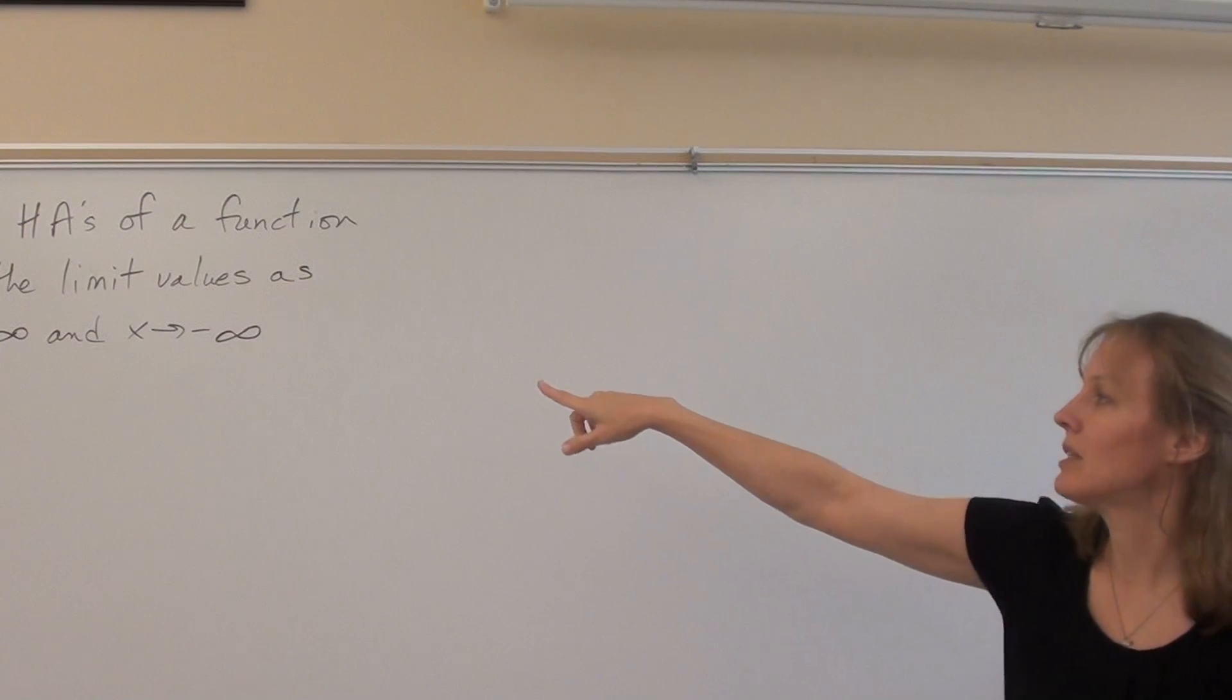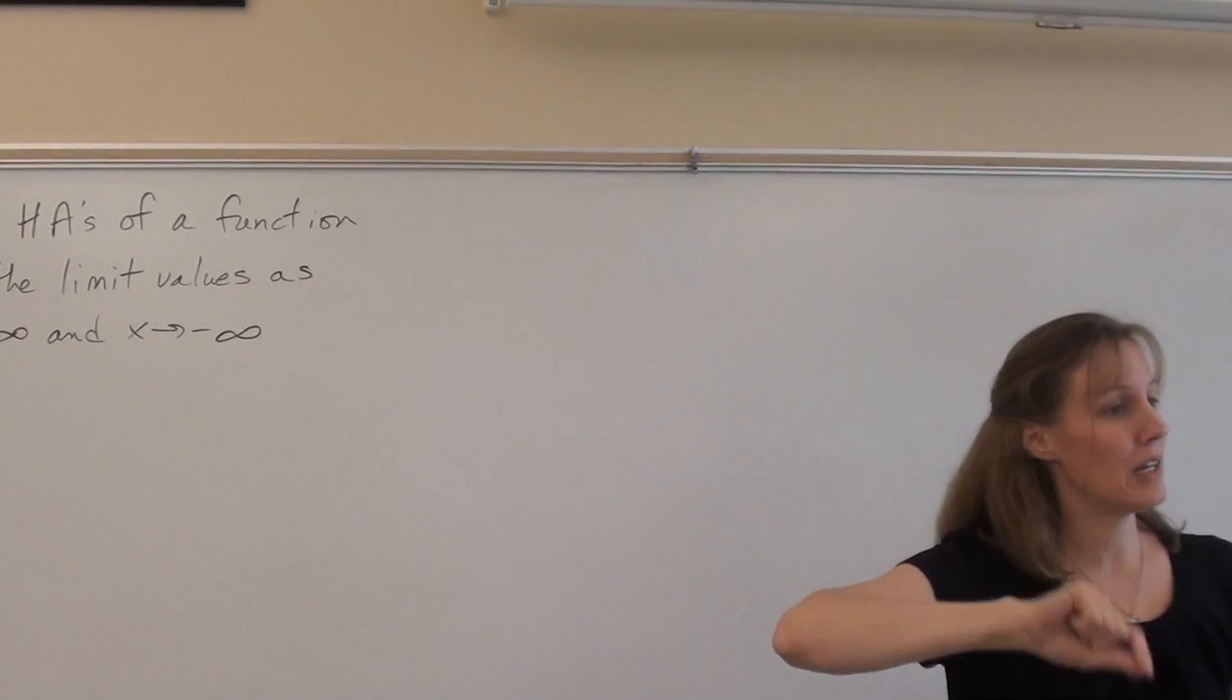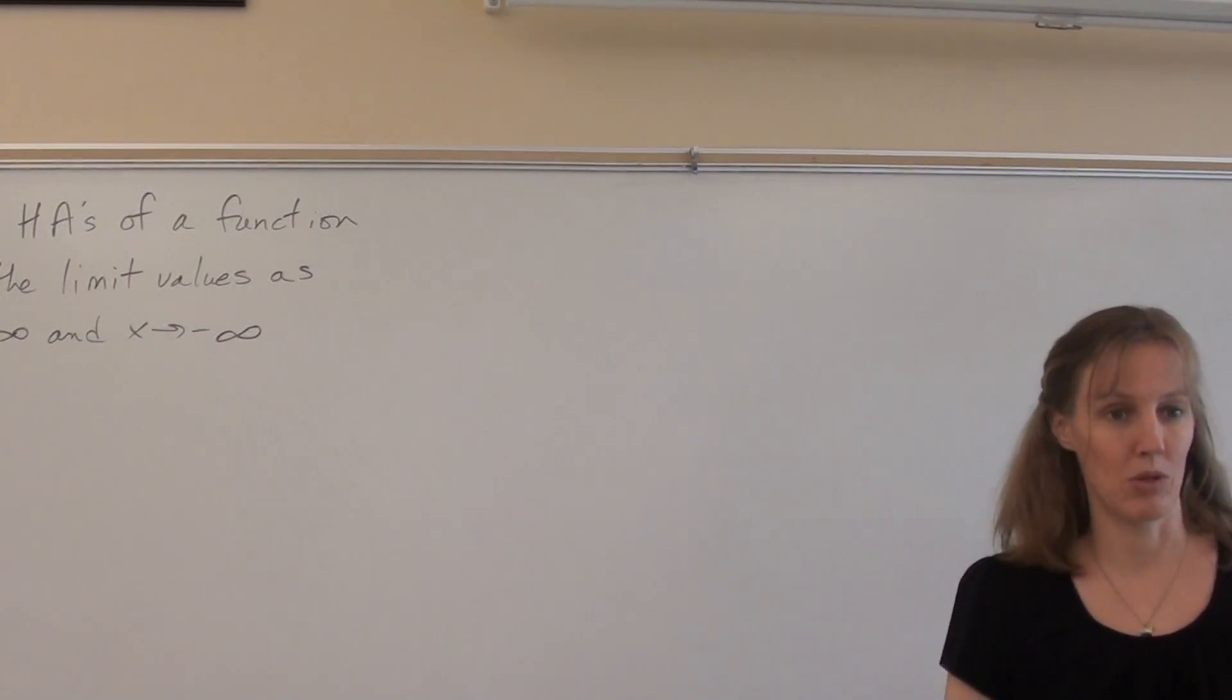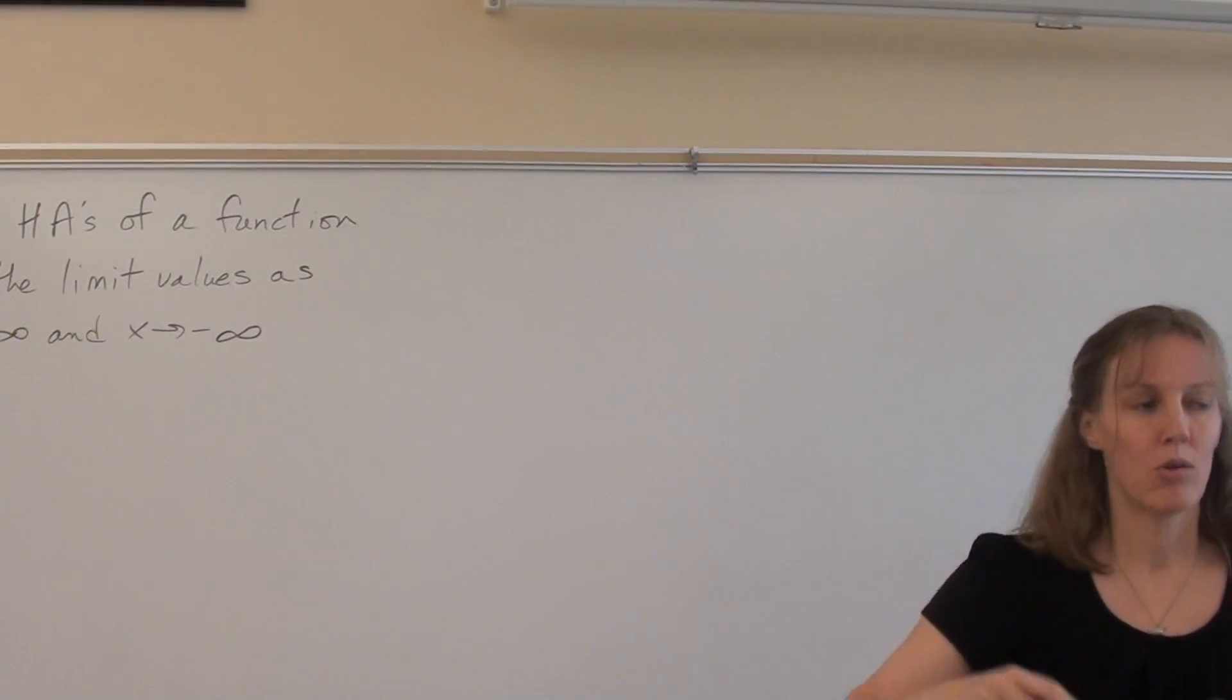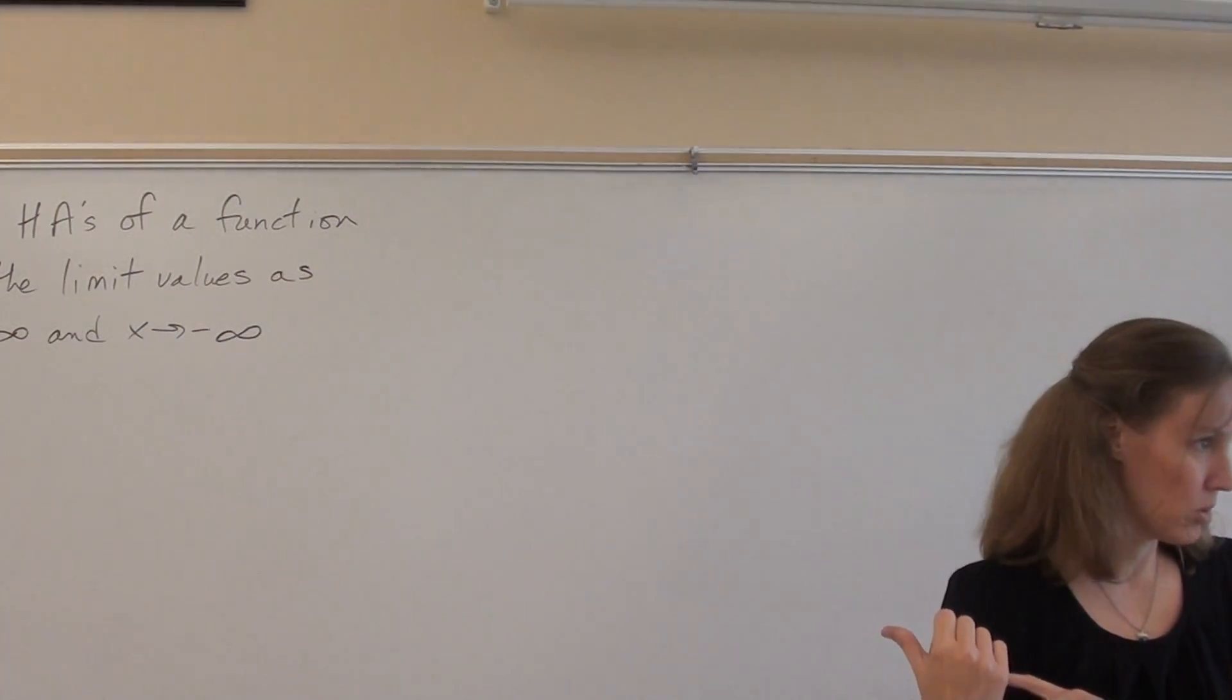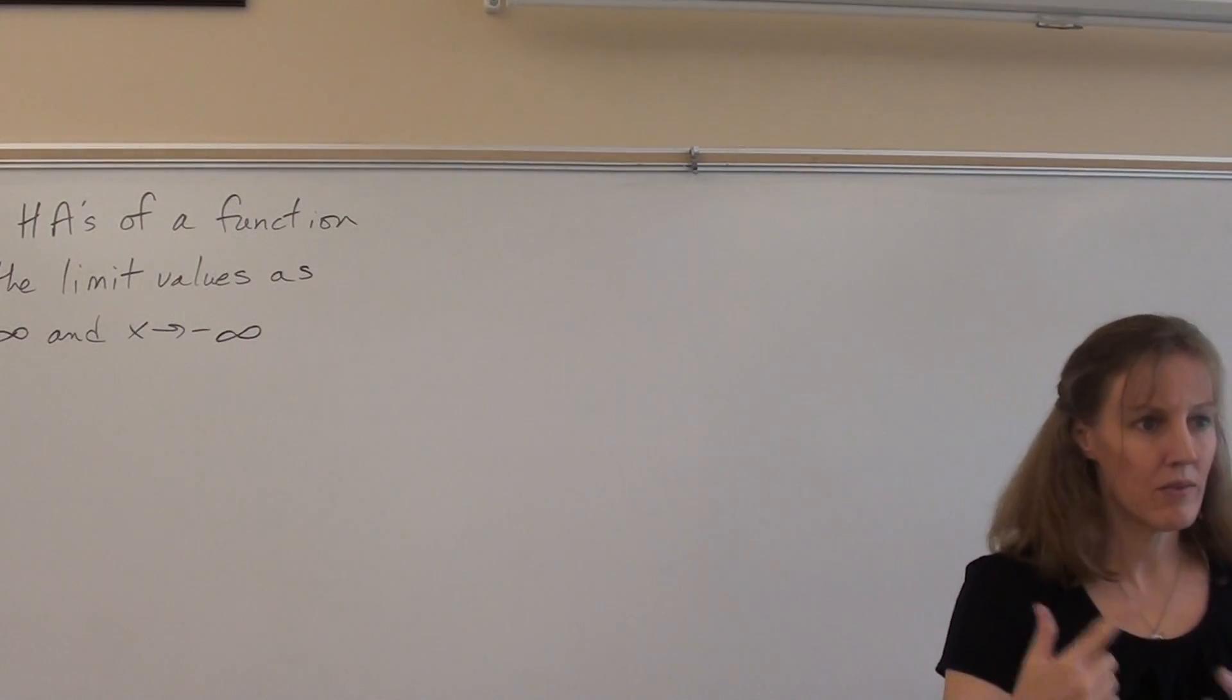So the horizontal asymptotes are the behavior that the function has way out at the very far ends when x is infinity or x is negative infinity. The limits as x approaches infinity and negative infinity are the same as the horizontal asymptotes, and vice versa.